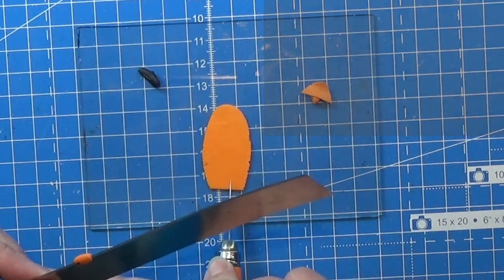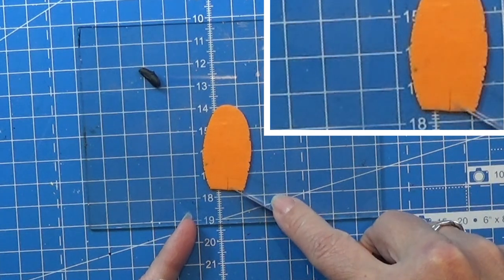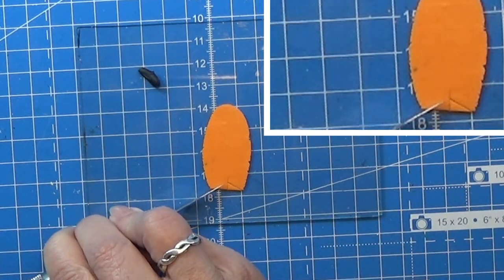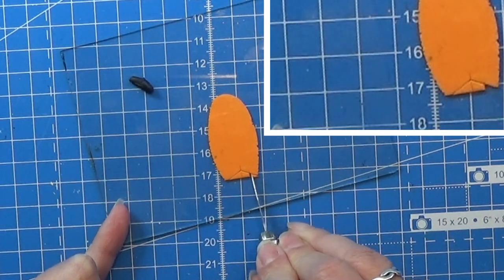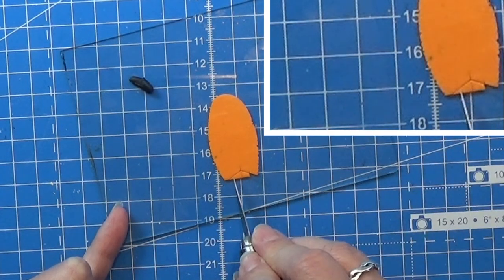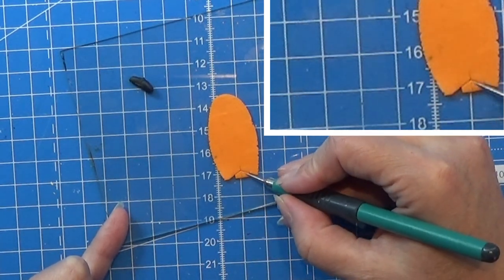Now I am going to work on the side fins for this little goldfish so I am cutting out two triangular shapes and I am going to give them a few lines on there to mark that they are fins on the fish.